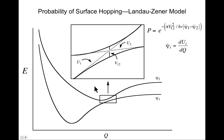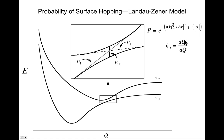The probability of crossing from one surface to another is given by one simple model known as the Landau-Zener model. It says the probability is exp(−π v12² / ħv(ψ̇1 − ψ̇2)), where v12 is the coupling matrix element, v is a velocity term, and ψ̇1 and ψ̇2 are the derivatives of the energy with respect to the coordinate on each state surface.